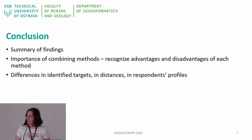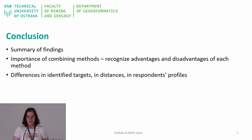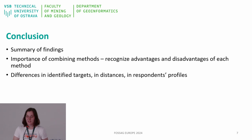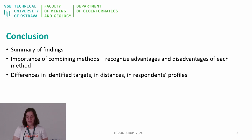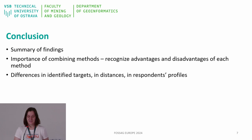In conclusion, while web mapping has its advantages, it also has limitations that need careful consideration. Combining web mapping with traditional methods can provide a more comprehensive understanding. Future research should focus on improving data accuracy and addressing privacy concerns to enhance the effectiveness of this method.